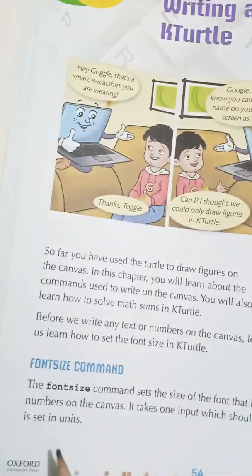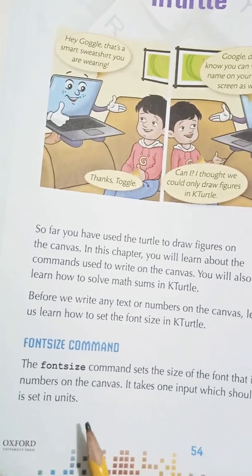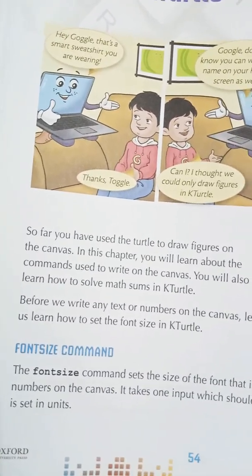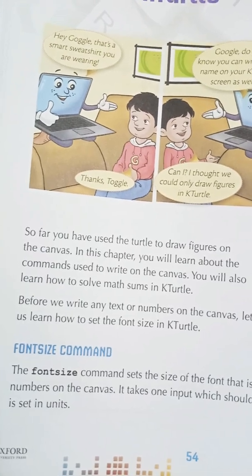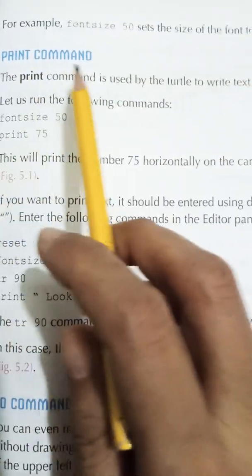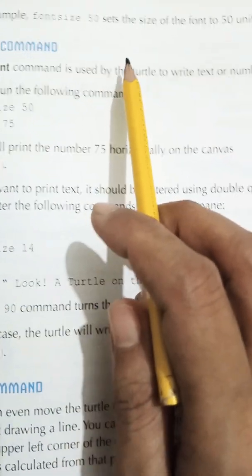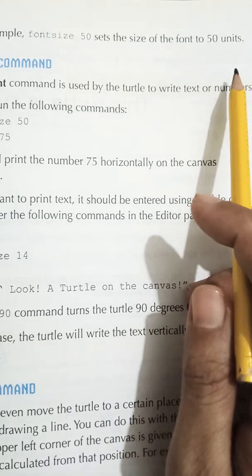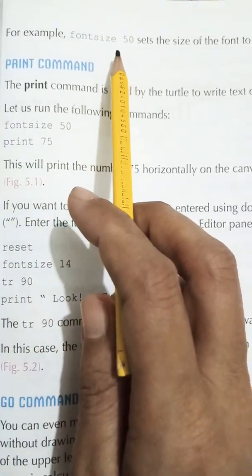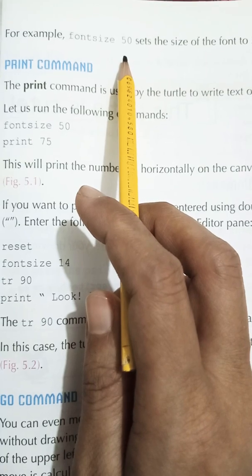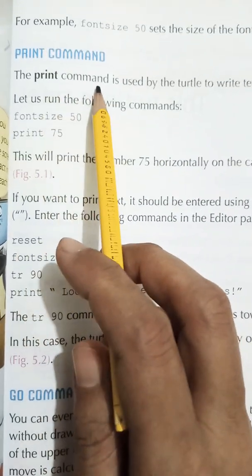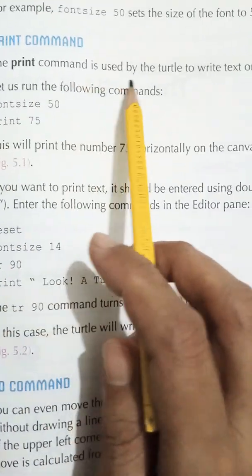The font size is the size in which we want to write something. For example, font size 50 sets the size of the font to 50 units. Whatever number you write after font size, it will set the font size. Next is the print command — it is used by the turtle to write text or numbers on the canvas.